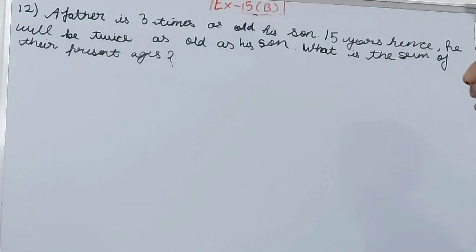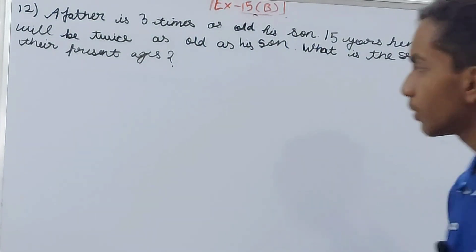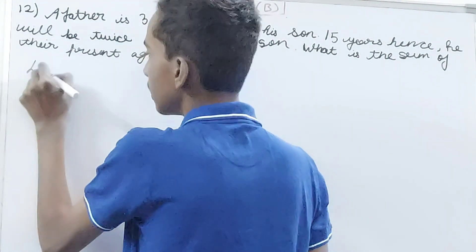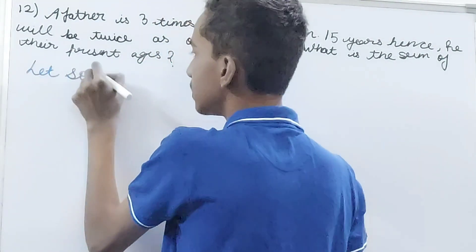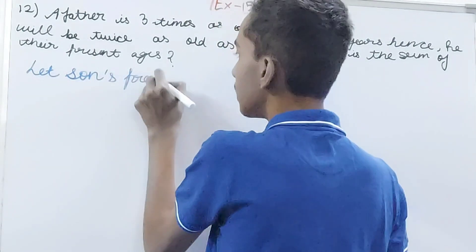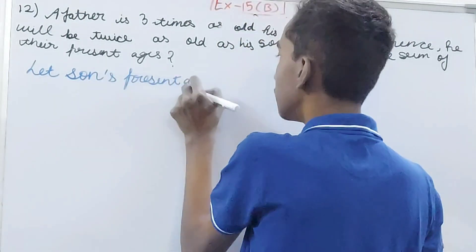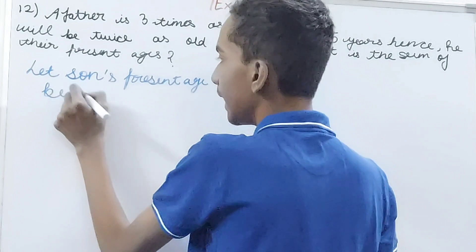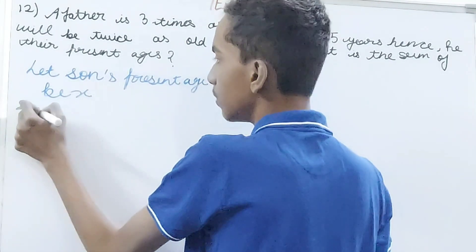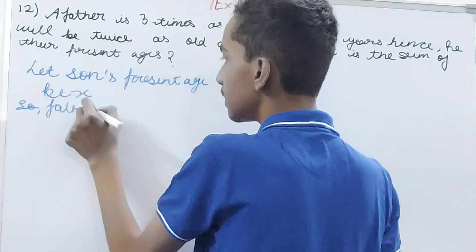15 years hence he will be twice as old as his son. What is the sum of their present ages? This is a very simple question. Let son's present age be x.